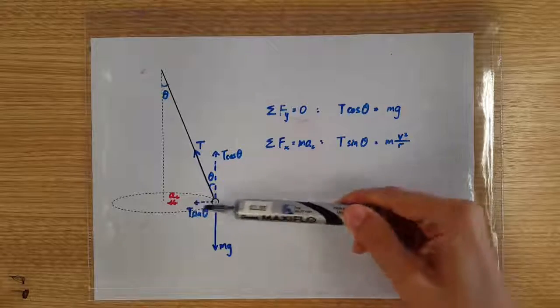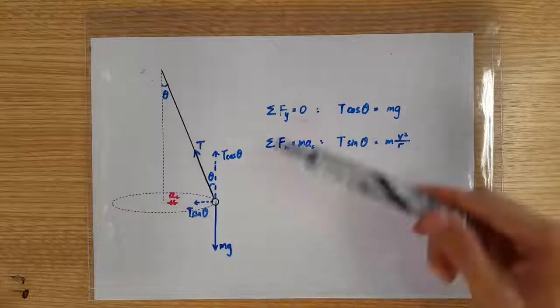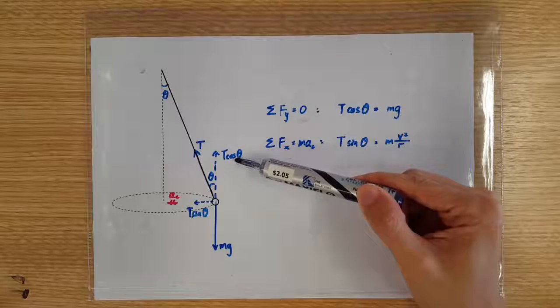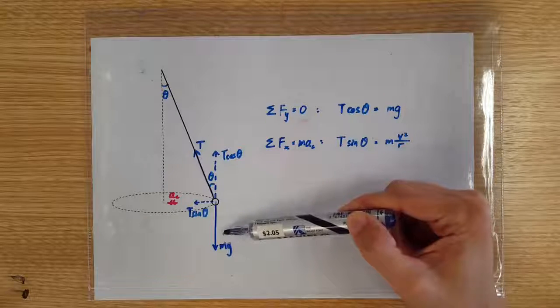We know that the net force is purely horizontal, so vertically the net force should be zero. So the upward T cos θ must exactly match the downward mg.